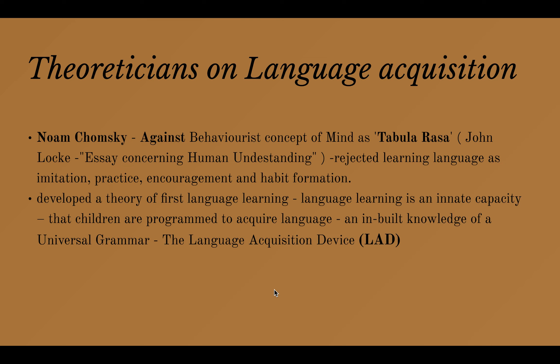Behaviourism, as we have already discussed, is based on the concept of stimulus and response. They established that learning is an observable change in human behaviour based on some kind of stimulus. Behaviourists stuck to the tabula rasa concept — that language is acquired through imitation, practice, drilling, encouragement, and habit formation. Noam Chomsky was against all of these ideas.